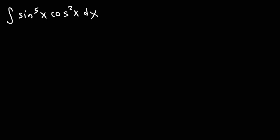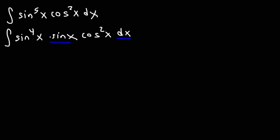Feel free to pause the video. The question is: should we make u equal to sine or cosine? Cosine has an even power and sine has an odd power. What we want to do is make u equal to cosine, because we can take out a sine and leave it by itself, then convert sine to the fourth into cosine. We're going to write sine to the fifth as sine to the fourth x times sine, times cosine squared. This sine pairs up with dx to become our du, and everything else we want in terms of cosine, not sine.